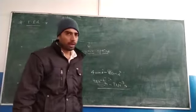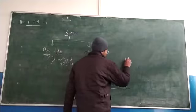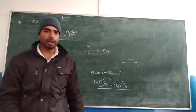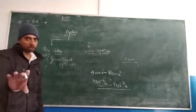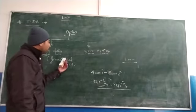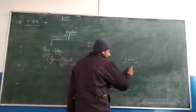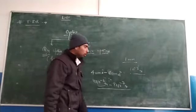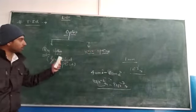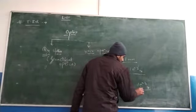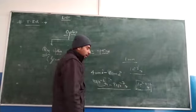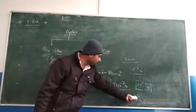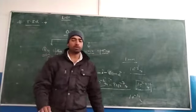मैंने एक example दिया: 1 mm के hole पर light गिराई — तो इसकी study ray optics में करूंगा या wave optics में? 1 mm यानी 10⁻³ m का hole अभी भी light की wavelength (10⁻⁷ m) से बहुत ज़्यादा बड़ा है। तो ray optics में ही करूंगा। लेकिन अगर hole 10⁻⁷ m या 10⁻¹⁰ m की order का हो जाए — wavelength के comparable या उससे भी कम — तो wave optics में करेंगे।